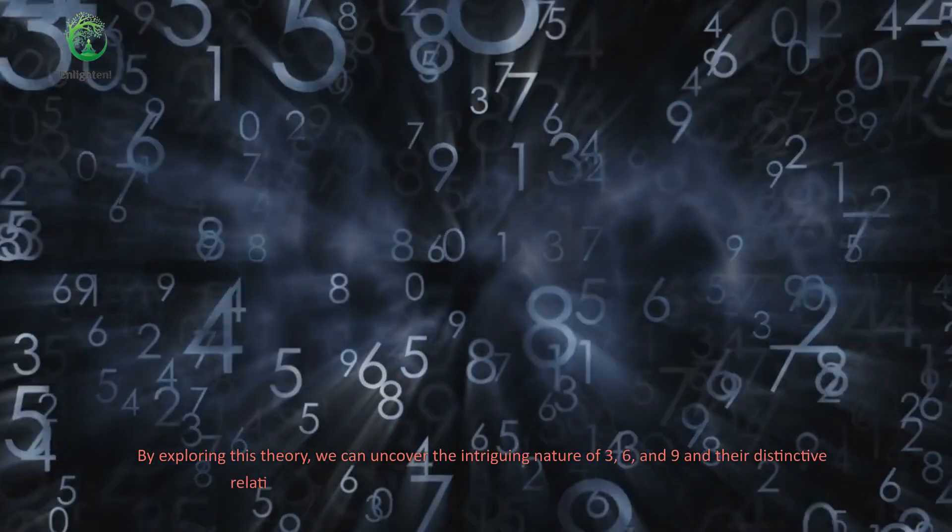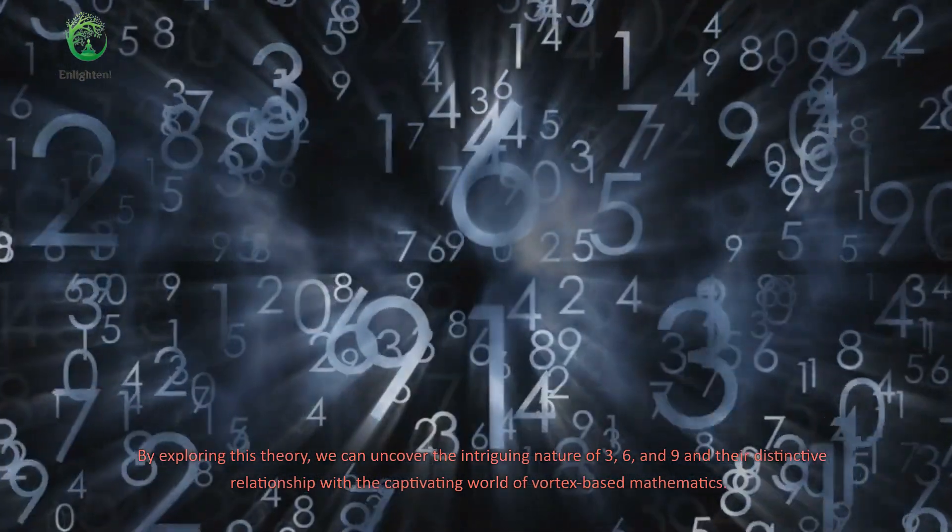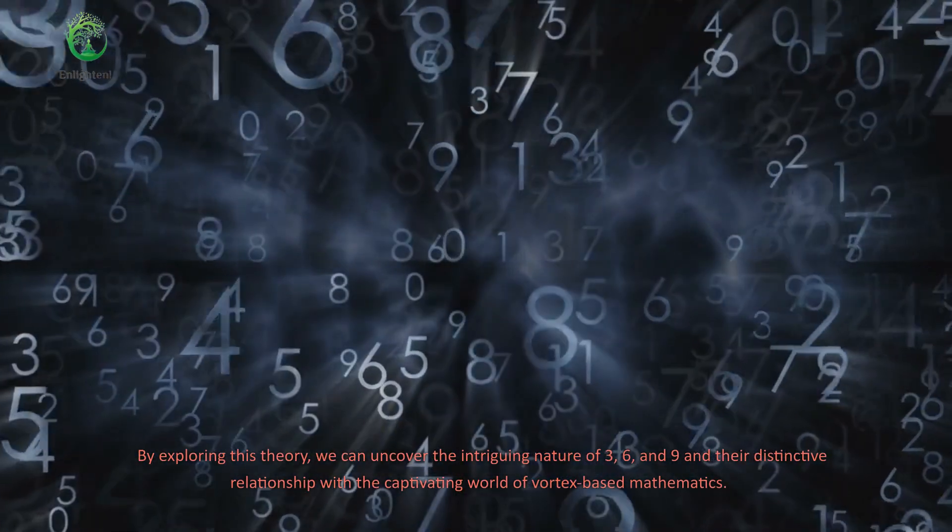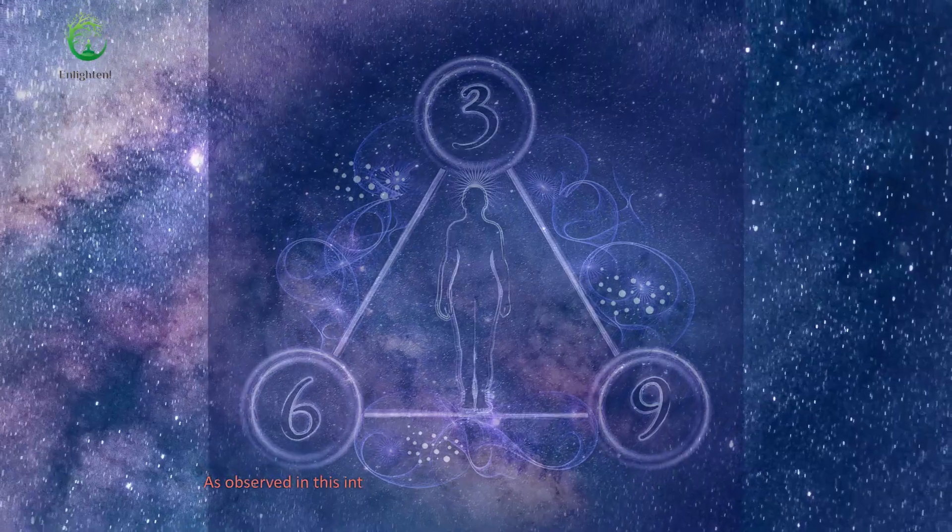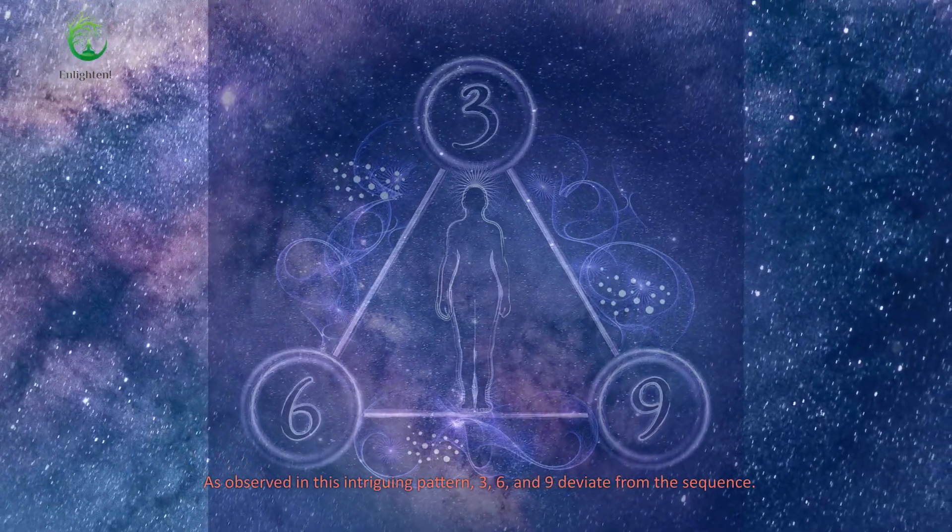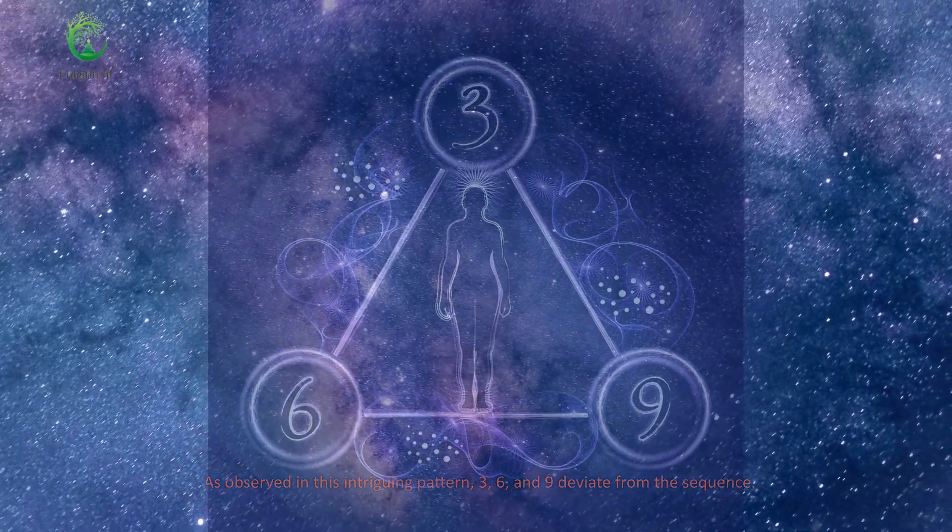By exploring this theory, we can uncover the intriguing nature of 3, 6, and 9 and their distinctive relationship with the captivating world of vortex-based mathematics. As observed in this intriguing pattern, 3, 6, and 9 deviate from the sequence.